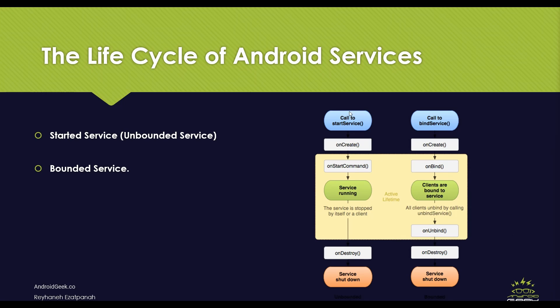For a started service, following this path, a service will initiate when an application component calls the startService method. Once initiated, the service can run constantly in the background even if the component that started it is destroyed. Two options are available to stop execution: calling the stopService method, or the service can stop itself by using the stopSelf method.